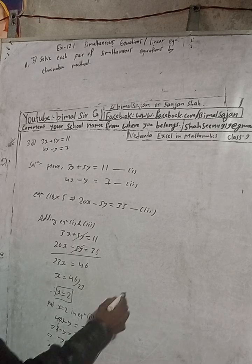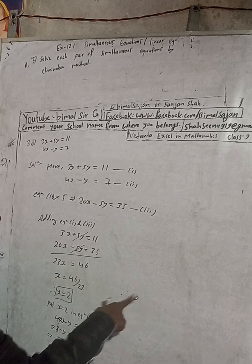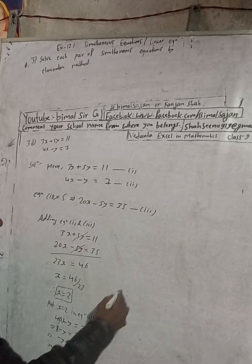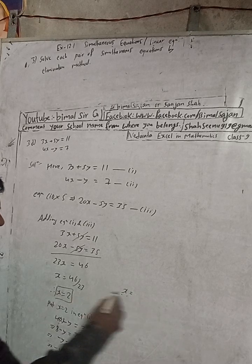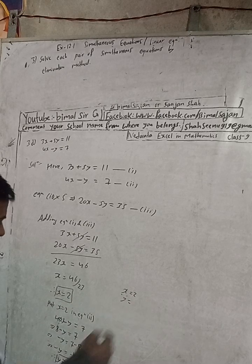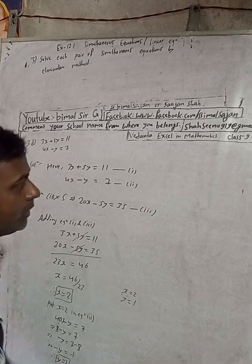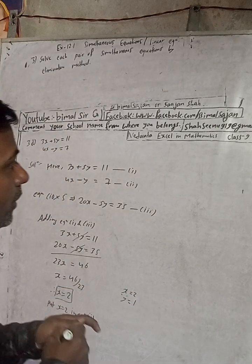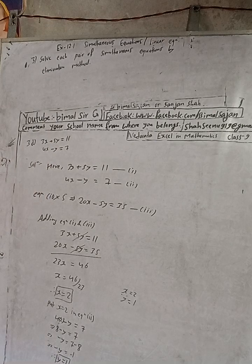So our answer is what? x is equal to 2 and y is equal to 1. 2 comma 1. The answer is 2 comma 1, correct.